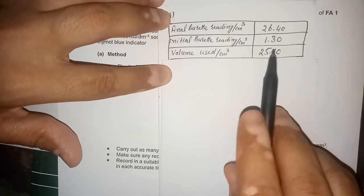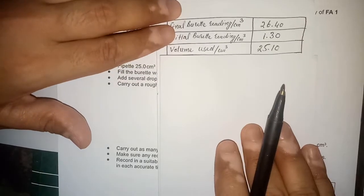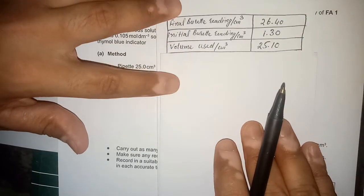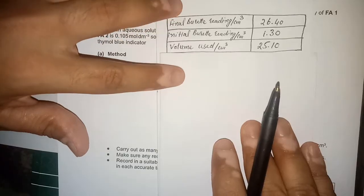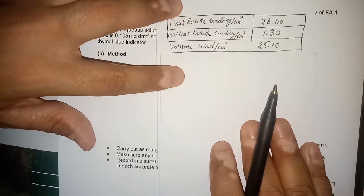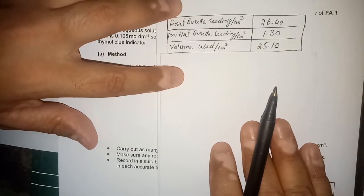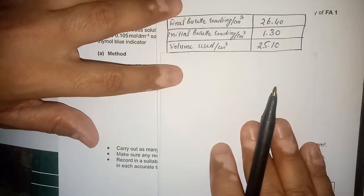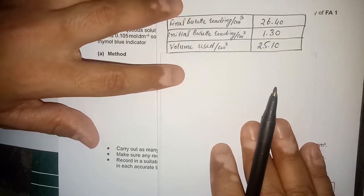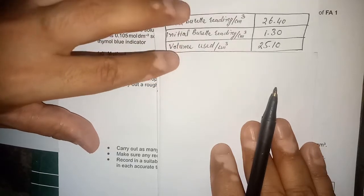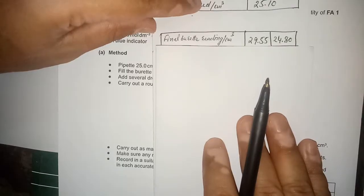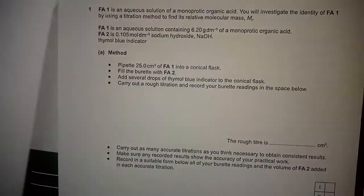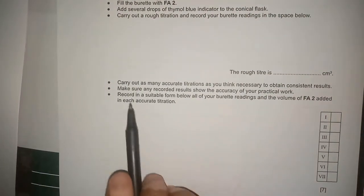This first entry will become the rough titration. You must remember that the difference between the rough titration and your first valid titration must be less than 0.2. As directed, you have to repeat the same experiment and do as many titrations as required to get accurate, consistent results.